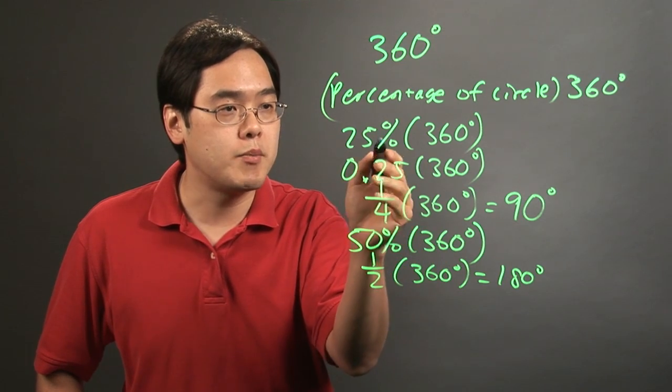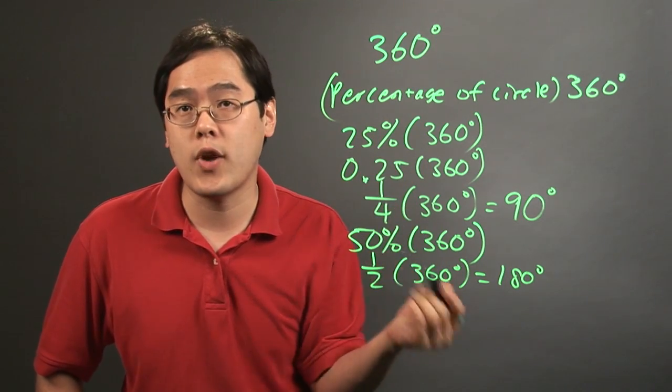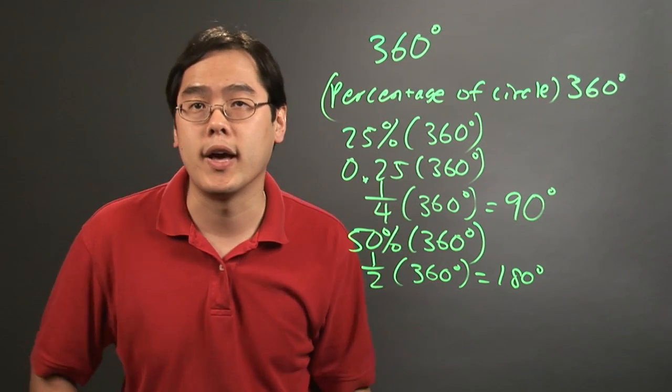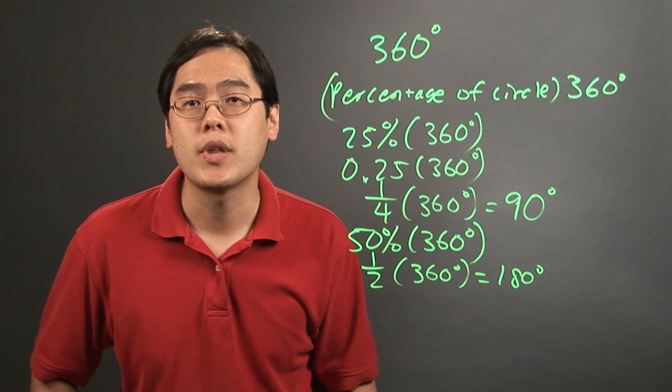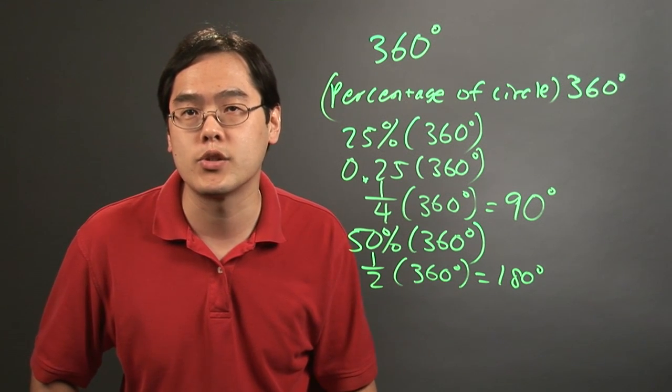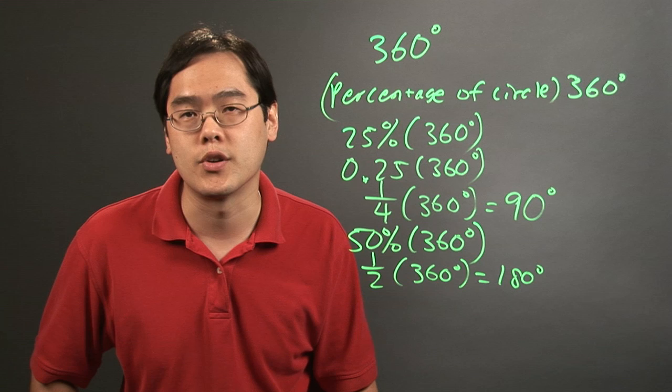But either way, take the percentage, convert it to decimals or fractions if you want to, and then multiply by 360. So I'm Jimmy Chang and that's how to find the measure of the central angle rounding to the nearest whole number using percentages of the circle.